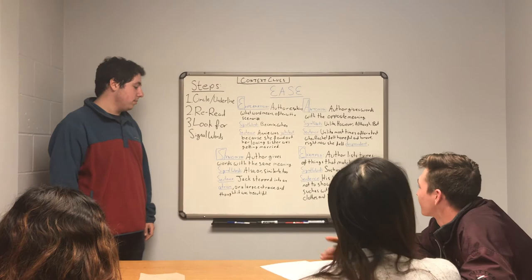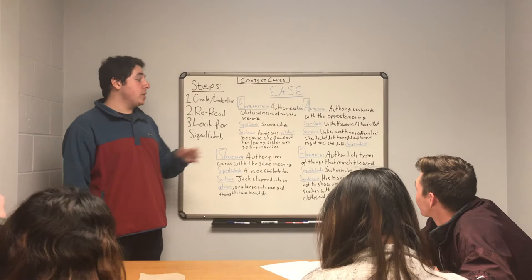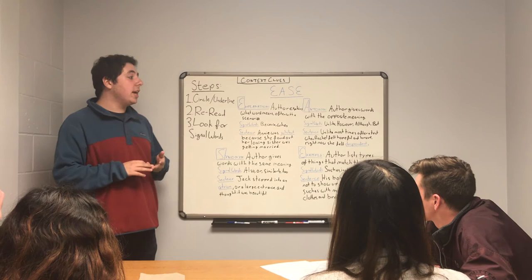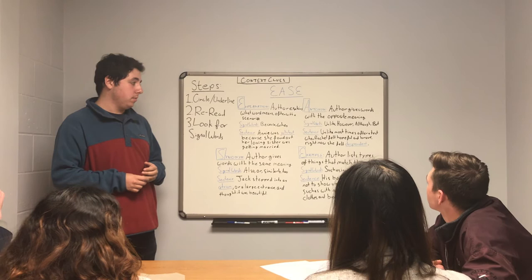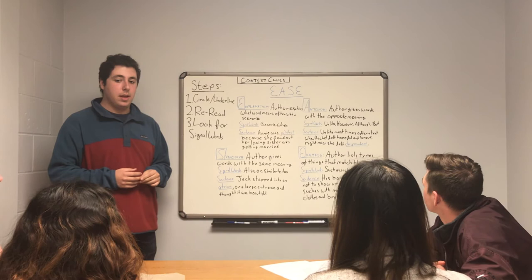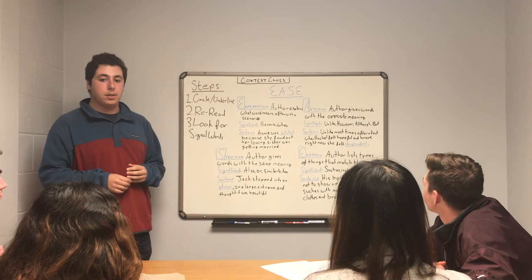Now we have Antonym — when an author gives words with the opposite meaning, what the word doesn't mean, to help us understand what it does mean. Signal words for this are 'unlike,' 'however,' 'although,' and 'but.' Alicia reads: 'Unlike last time after a test when Rachel felt hopeful and brave, right now she felt despondent.' Despondent probably means nervous or worried — it uses the signal word 'unlike' and is the opposite of hopeful and brave.